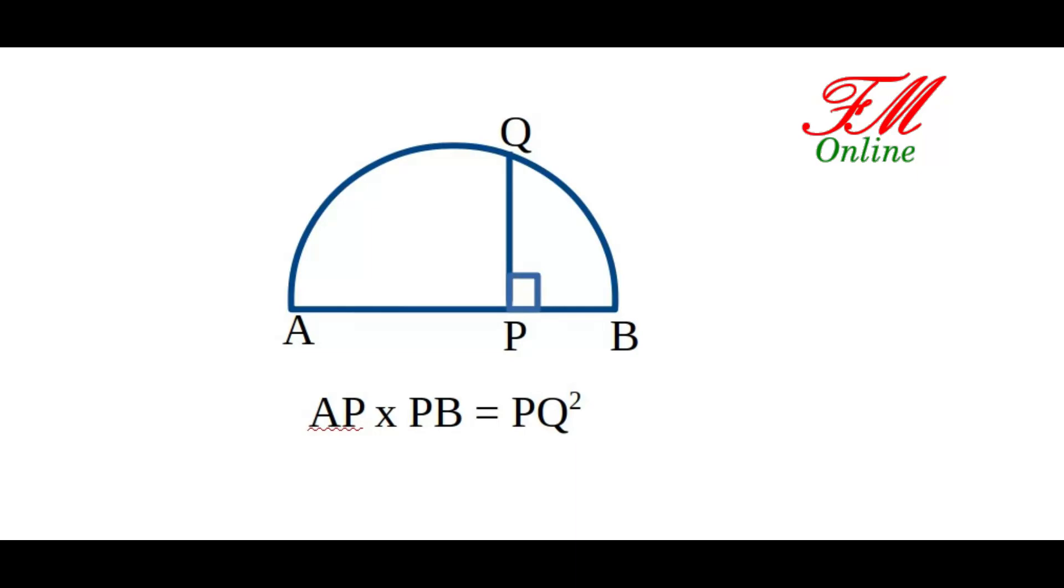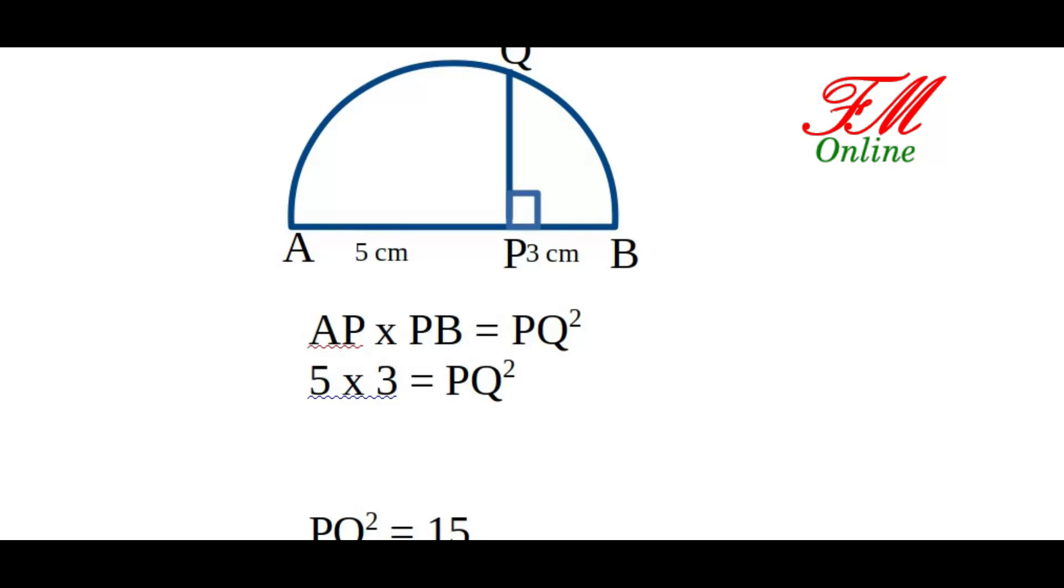Take AP equal to 5 centimeters and PB equal to 3 centimeters. Now, 5 into 3 equals PQ square. That is, PQ square equals 15. So PQ equals root 15.